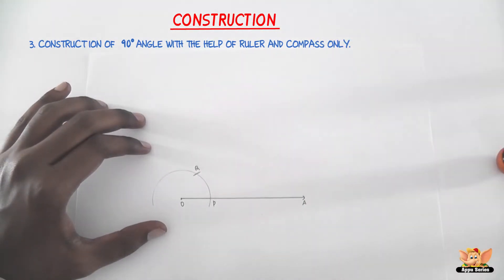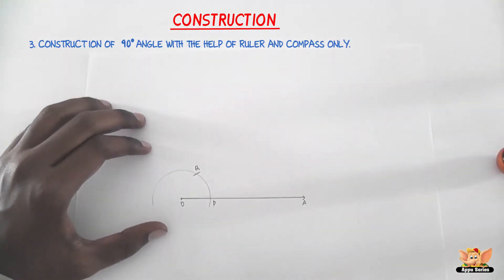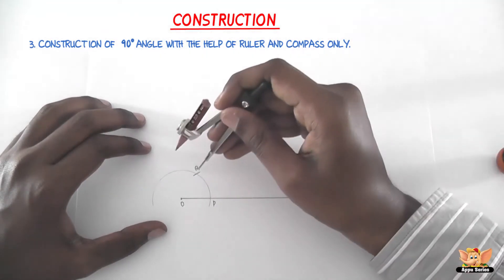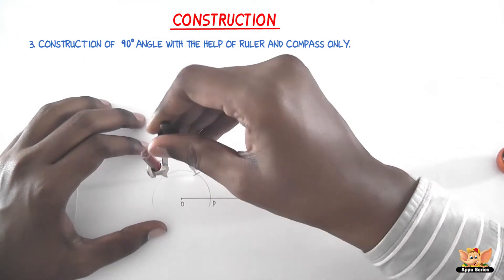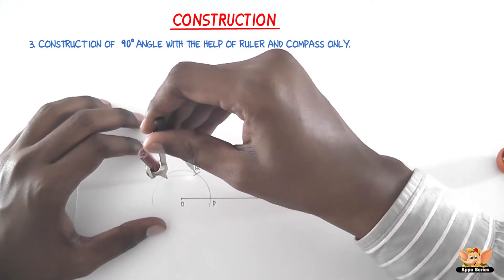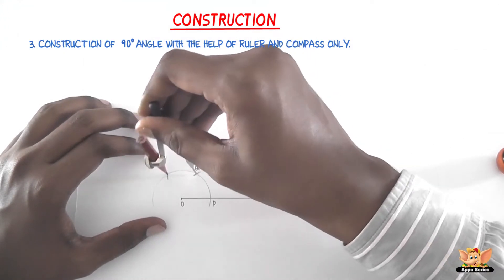The fourth step is with Q as center and the same radius as in steps 2 and 3, draw an arc cutting the arc that we just drew again. So with Q as center and same radius, draw another arc in the same arc and name it R.